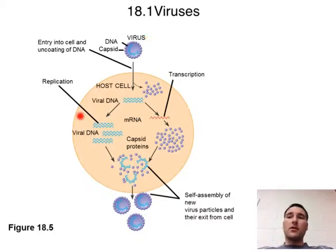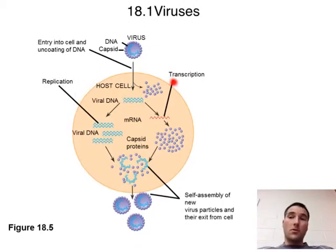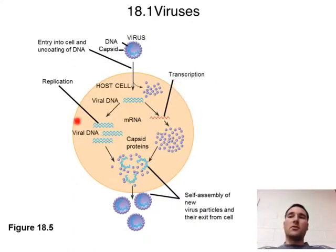So we have this host cell down here. Viruses can't reproduce on their own, but once they're in a host, they can basically make the host a virus-making machine. That's what they'll do — they'll turn this host cell into a virus-making machine.